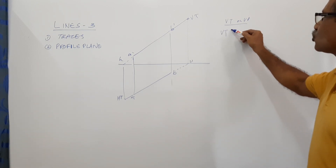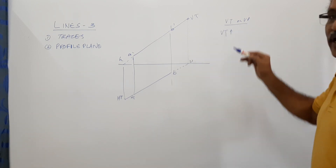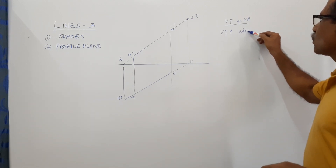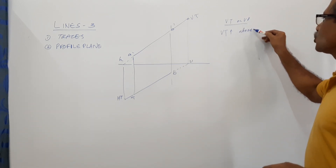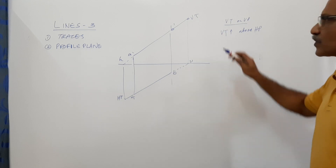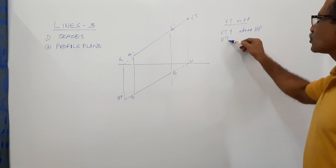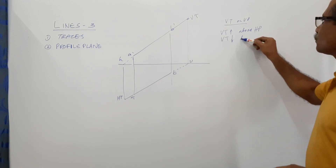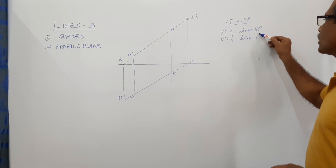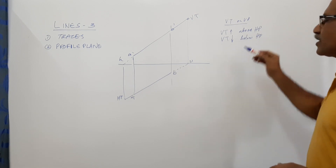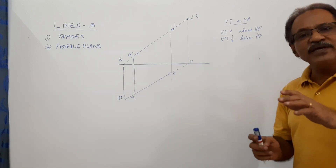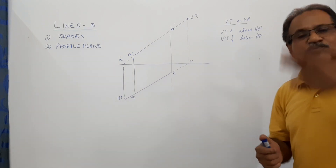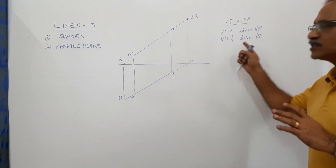If VT happens to be above XY, it means VT is above HP. If VT comes below XY, it means VT is below HP. A point lying on VP can be specified by its distance from HP — that distance is this measurement.